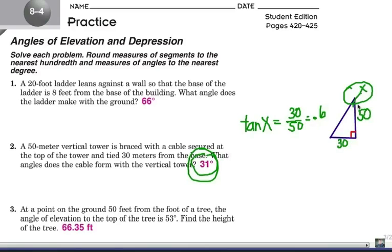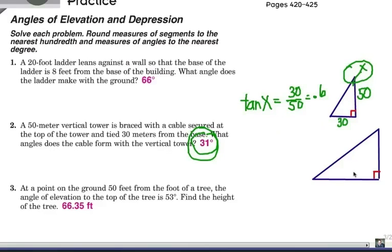Alright, moving on to number 3. Alright, let's label our parts here. We have a 50 foot tree. Alright, we want to find the height of the tree. So that vertical leg right there represents the tree height. And we are 53 degrees for the angle of elevation, looking up to the top of the tree. And we are 50 feet away from the tree on the ground. So there's our triangle.